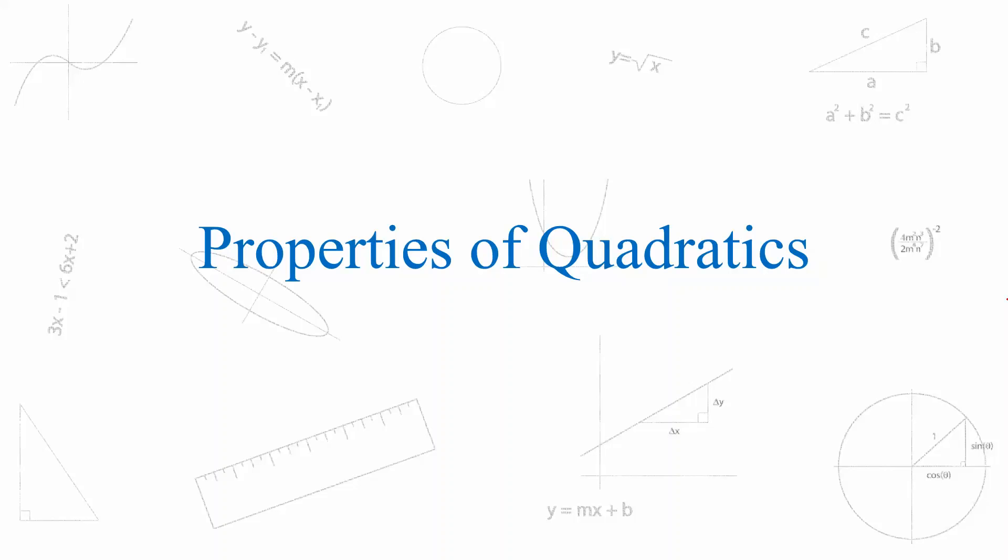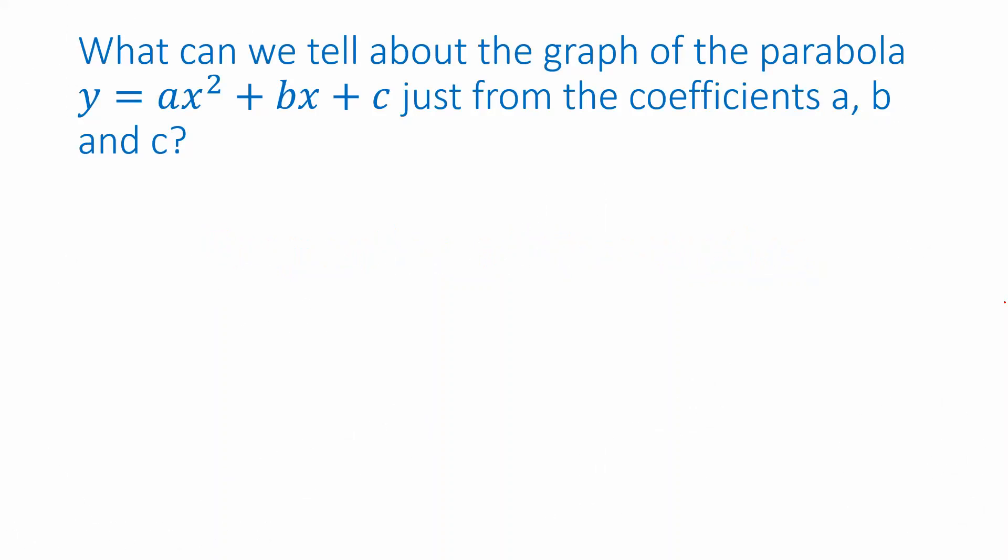Let's now review some of the properties we can determine about the graph of a quadratic function just from looking at its formula. What can we tell about the graph of a parabola from the formula, in particular from the coefficients of x squared, of x, and of the constant term?